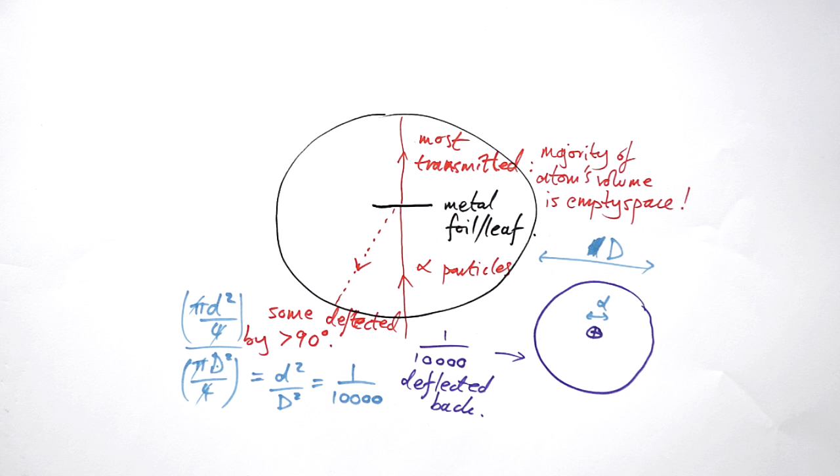One more thing that might come up is an idea of distance of closest approach. That means how close can an alpha particle actually get to a nucleus? All you have to do is take the kinetic energy of the alpha particle and equate that to the potential energy for the two positive charges separated by a distance r. That's going to be kqq/r. That r then is going to be the distance of closest approach.